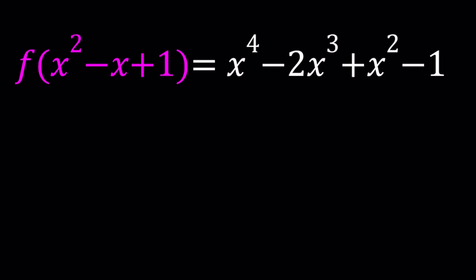Hello everyone. In this video we're going to be solving a functional equation. We have f of x squared minus x plus 1 equals x to the 4th power minus 2x cubed plus x squared minus 1. We're going to be solving for f of x. I'll be presenting two methods, so let's start with the first one.